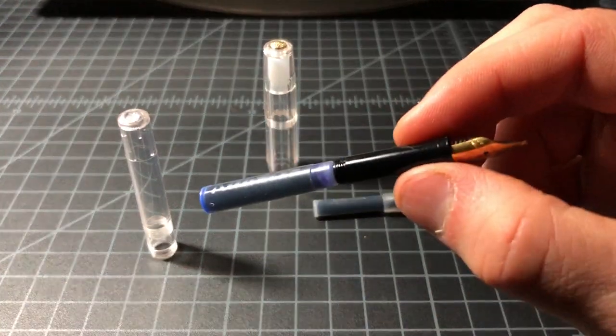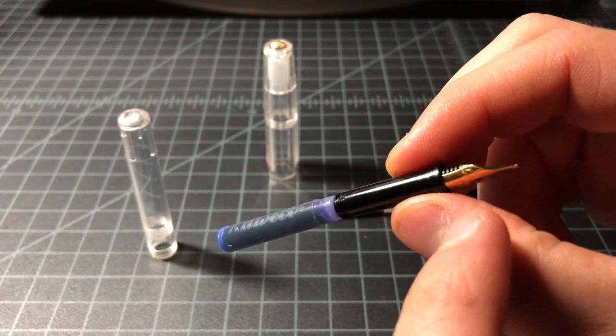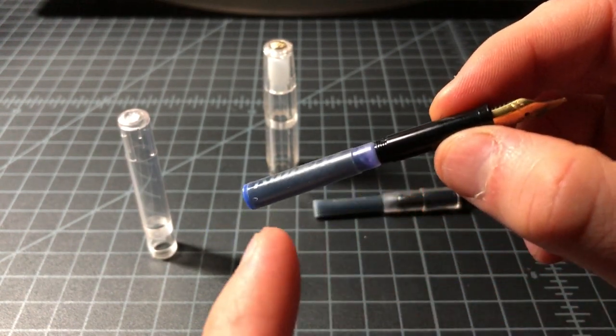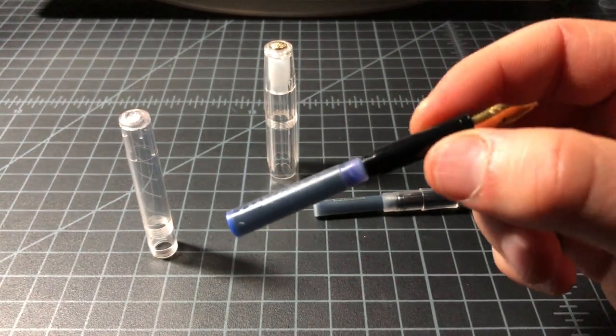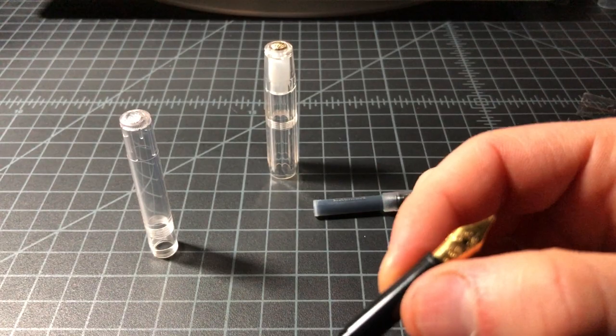Without the section, here's what you have. You have the nib, the feed unit, and the cartridge. And they actually write just like this. Not that you would ever use it, but you can see.